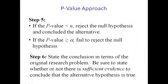In step five we compare the p-value to alpha. If the p-value is less than alpha, we reject the null hypothesis and conclude that the alternative is true. If the p-value is greater than or equal to alpha, we fail to reject the null hypothesis.